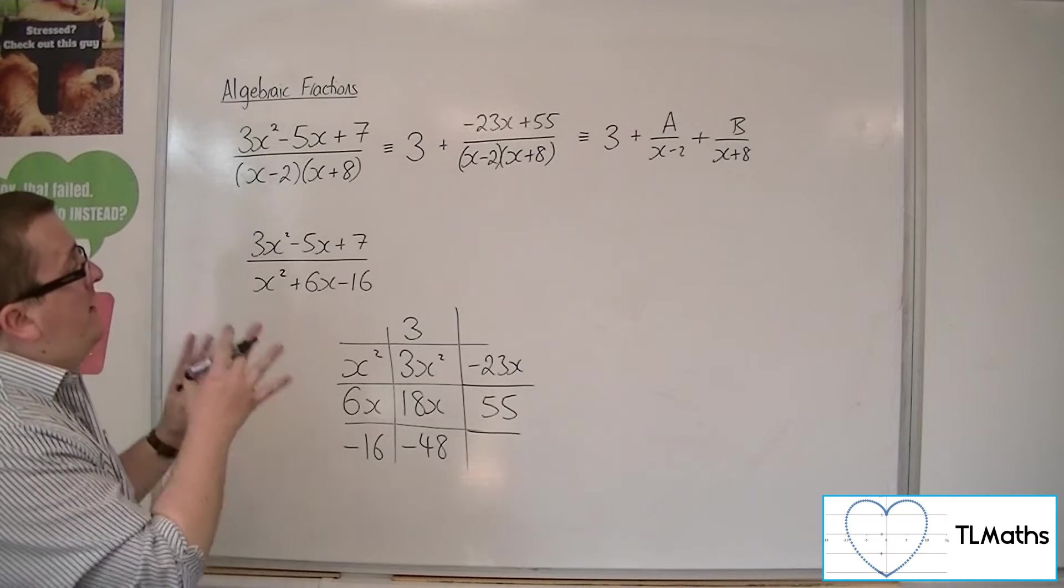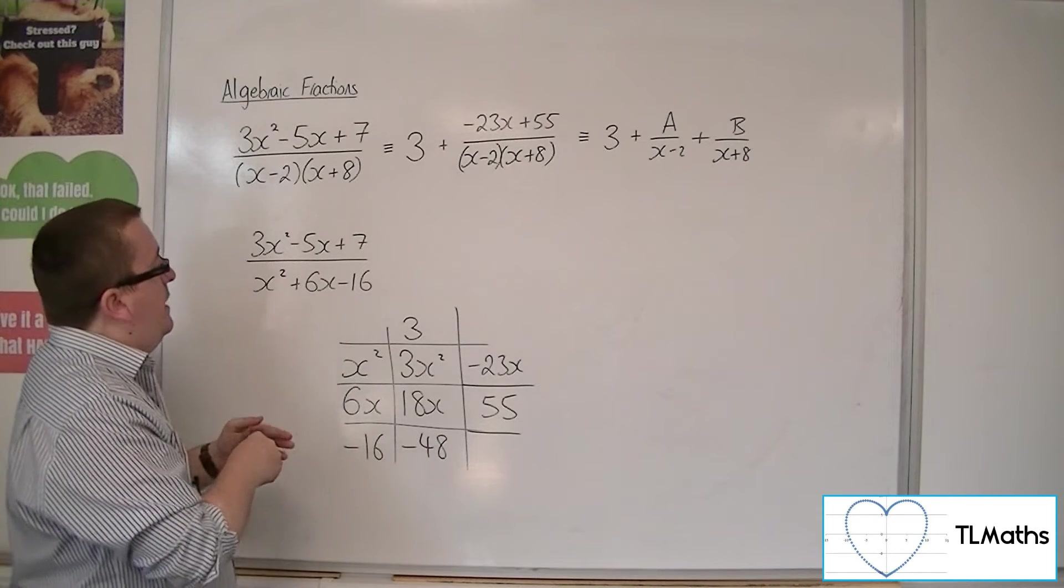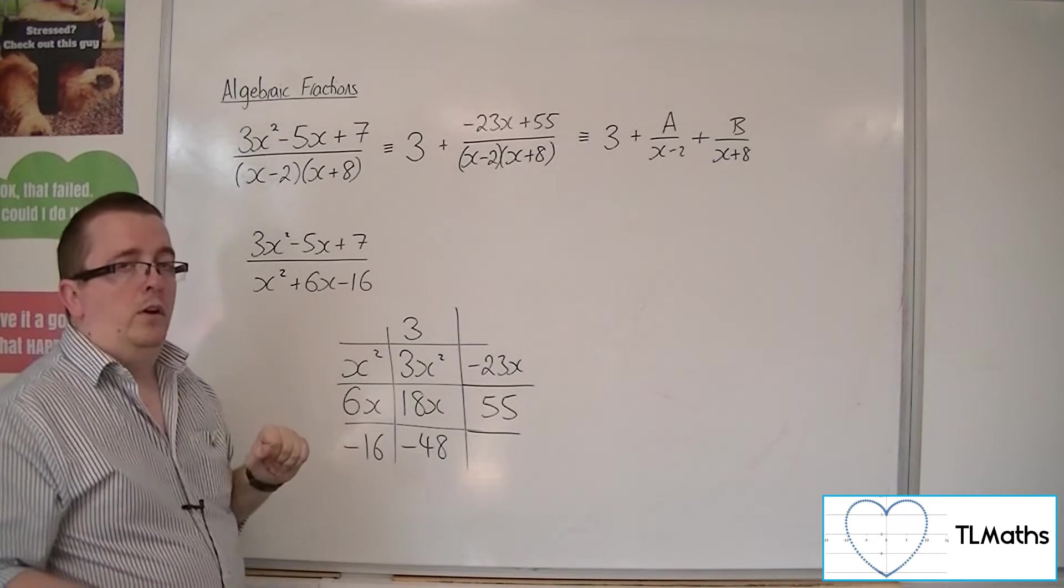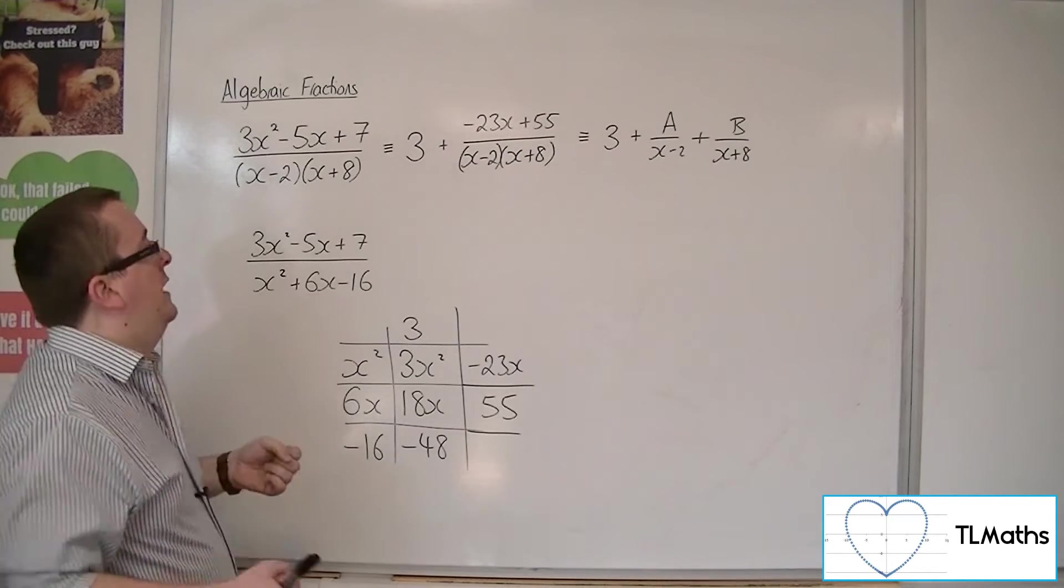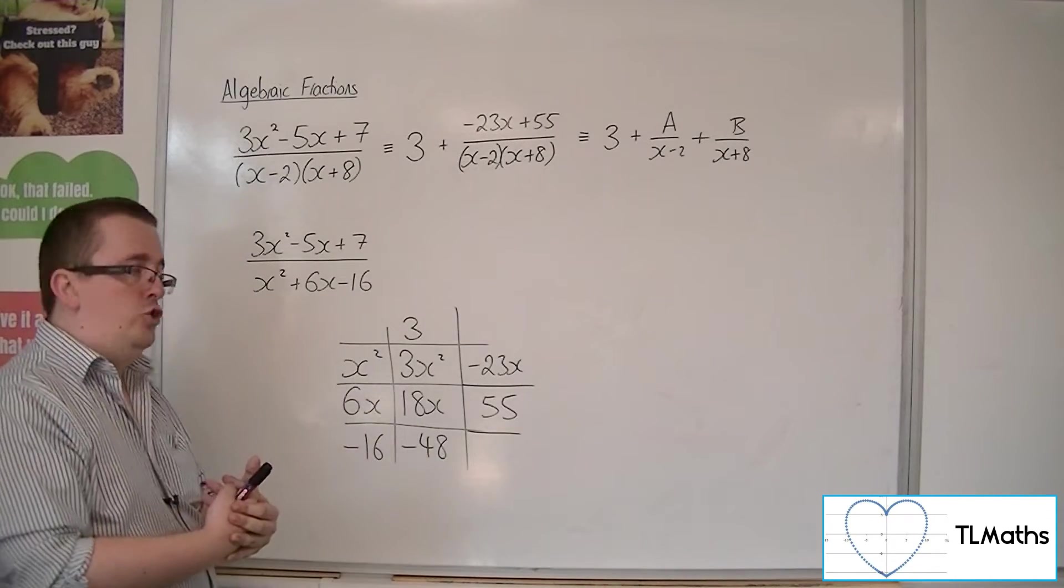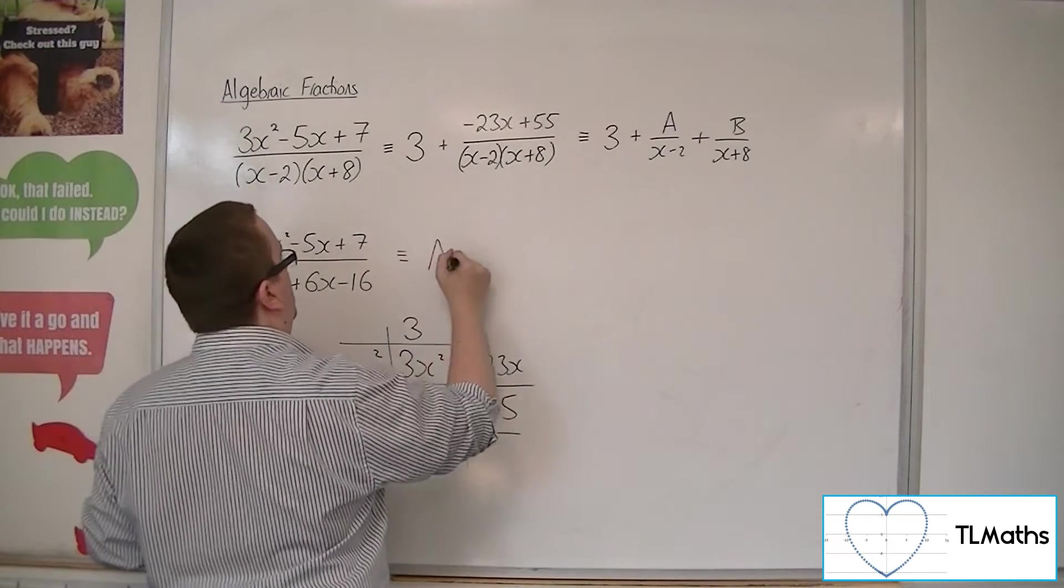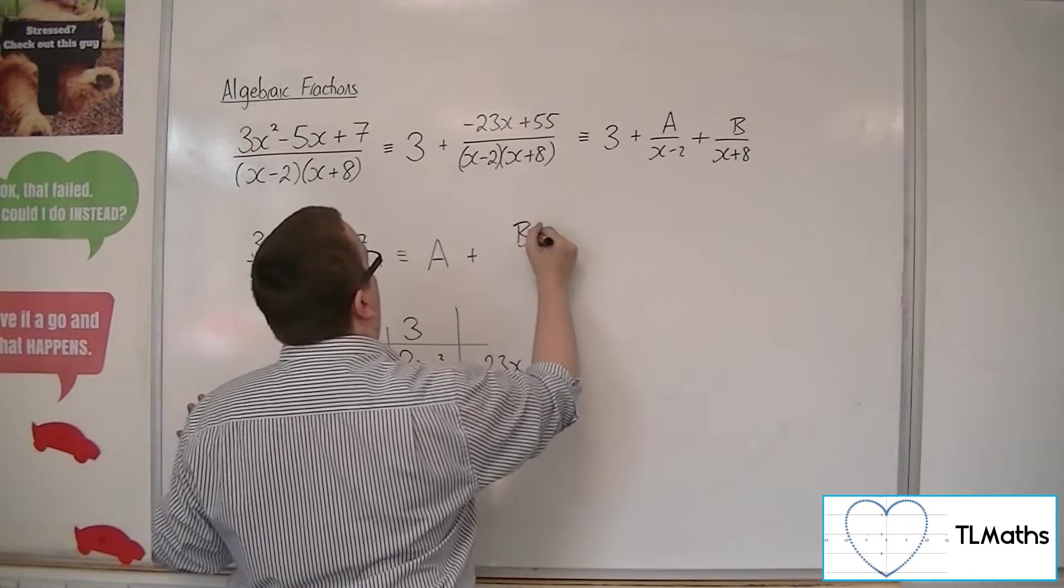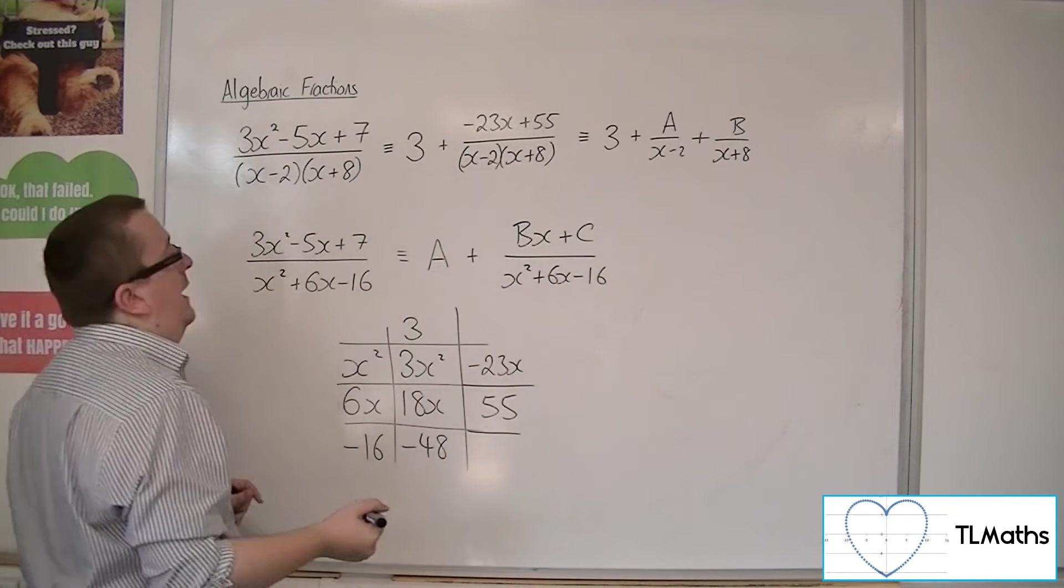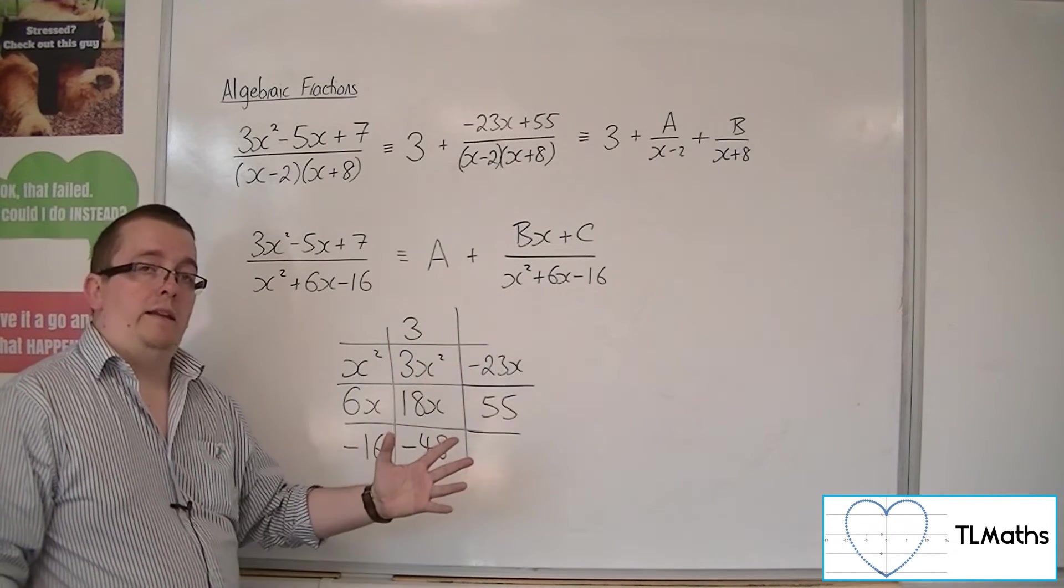Now, you don't have to use polynomial division because if you know that you've got the same power of x, the same largest power of x in the numerator and denominator, then you will get this constant term plus a proper fraction. So you can just say, well, that's going to be some number plus bx plus c over x squared plus 6x minus 16 and then use the form of partial fractions to find a, b, and c that way.